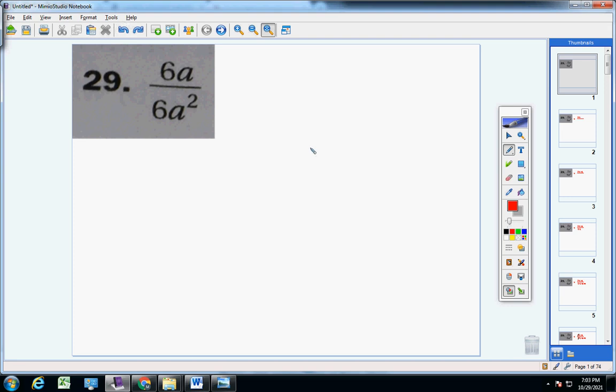The first thing you do is you list out the prime factors of six, and you get three and two. And then you have one a, so you put one a. Make sense? Now jump down here, write the prime factors of six, and then you have two a's, so you write a times a. It's that easy, Emma.